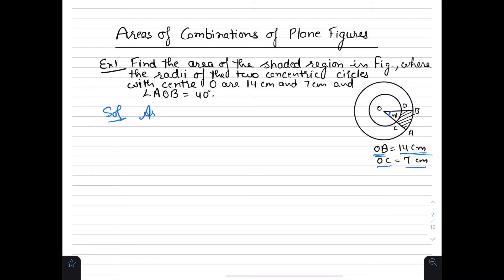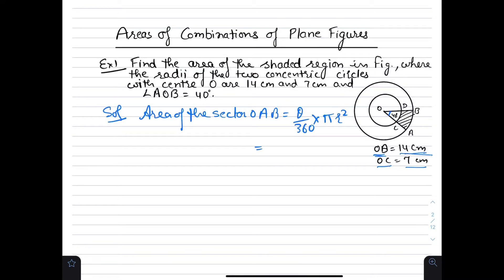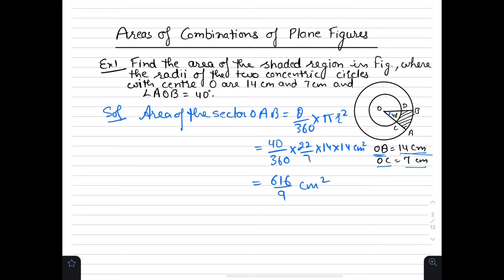Area of sector OAB equals theta upon 360 into pi R square. We know the area of a sector equals theta/360 × πR². The radius of the outer circle is 14 cm and angle theta is 40 degrees. So: 40/360 × 22/7 × 14 × 14 cm² = 616/9 cm².